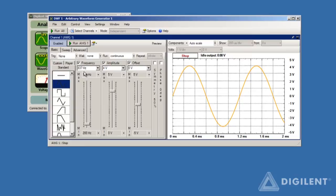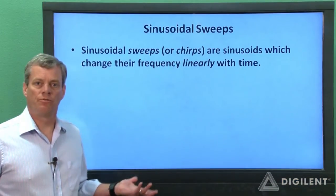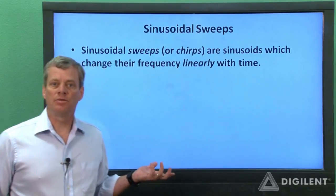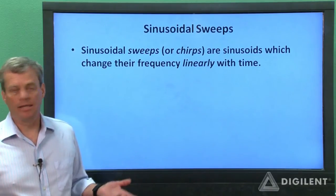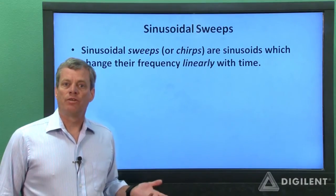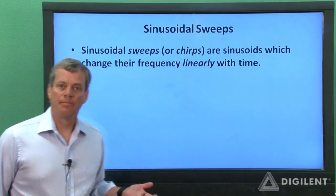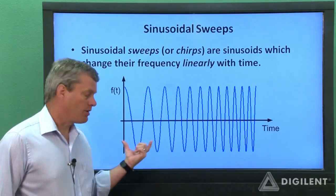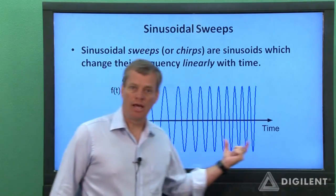Now that we have some experience with sine waves, let's look at one way to have the waveform generator change the frequency for us according to some set pattern. One type of signal whose frequency changes with time is a sinusoidal sweep. These types of signals are also called swept signs or chirps. Swept sinusoids change frequency linearly with time. This plot shows a sinusoidal sweep. The frequency starts out low and increases with time.